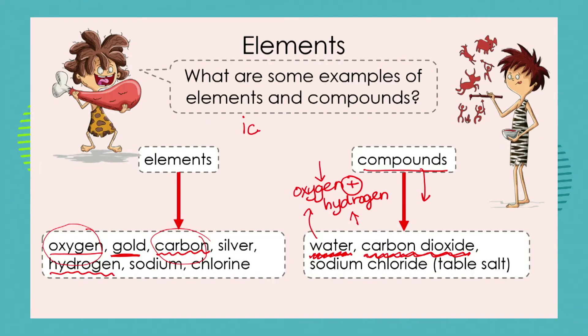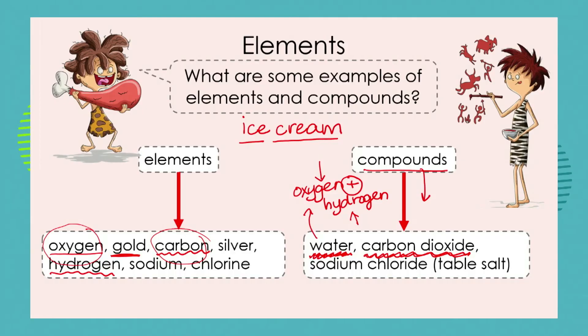In studying language, you've come across words that we call compound nouns. We take two words — ice and cream — and ice and cream have their own meanings. When we combine those two words together into a compound noun called ice cream, we get a new word that means something very different. So think of compounds like compound nouns, and elements are the simple substances like ice and cream.